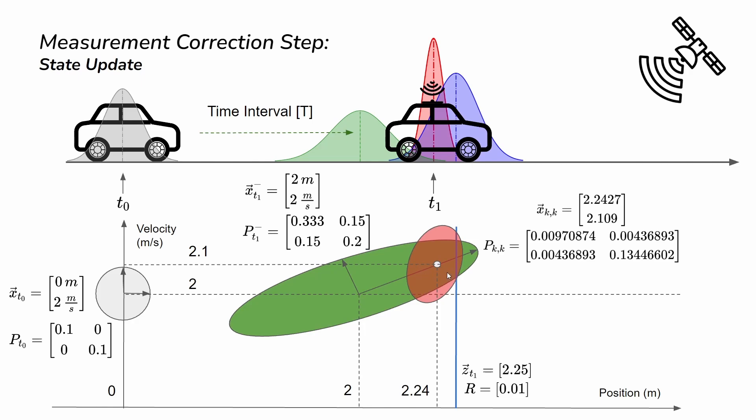That is how state estimation works. In this example we used position and velocity, but state estimation can be applied to many things — online calibration for robot or autonomous vehicle states during motion, sensor calibration for wheel tires, IMU offsets, and many other applications, all using the same concept. Don't forget to like and subscribe to the channel, and see you next time.